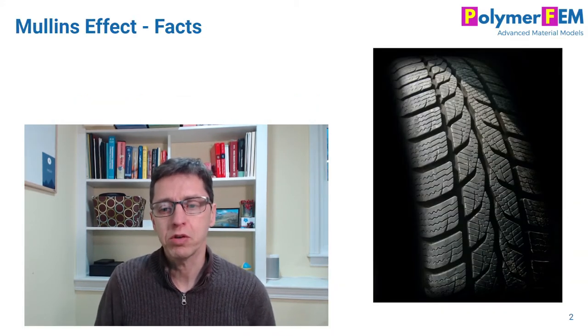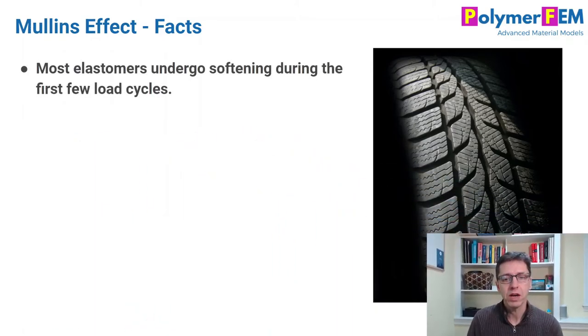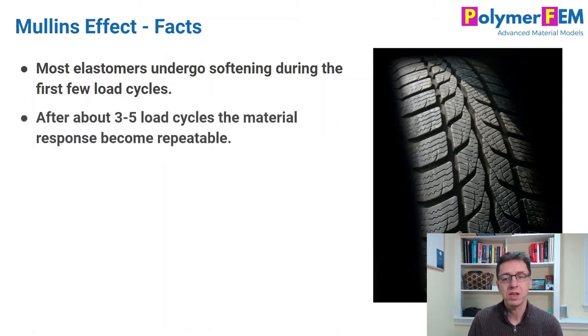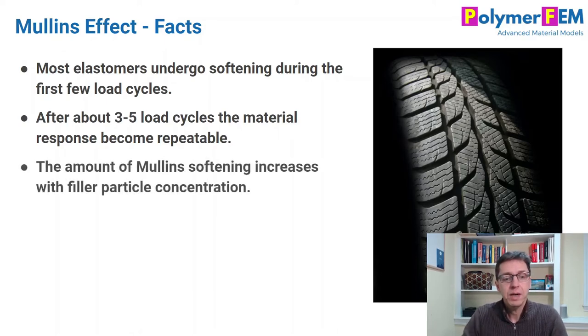The Mullins effect occurs in rubbers and rubber-like materials and most elastomers undergo this type of softening during the first few load cycles. If you have a material or product that undergoes thousands of cycles this may not be so important because this softening happens in the first three to five cycles, and after that the response becomes fully repeatable. The amount of softening is related strongly to the amount of filler particles in the rubber. The more filler particles there are, the more damage you see. Some materials have very little Mullins effect, typically unfilled natural rubber or silicone rubber, but most rubbers used in industrial applications have some amount of Mullins softening.